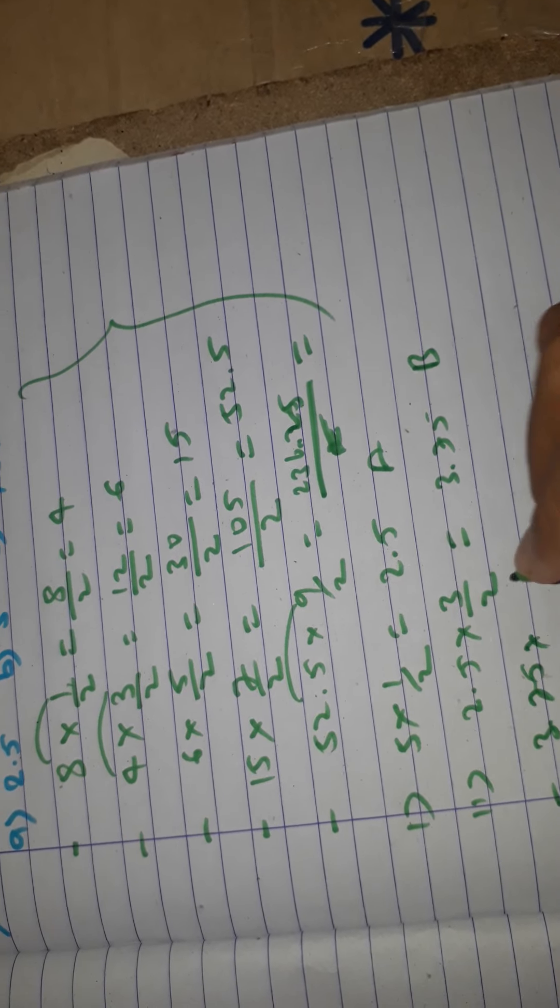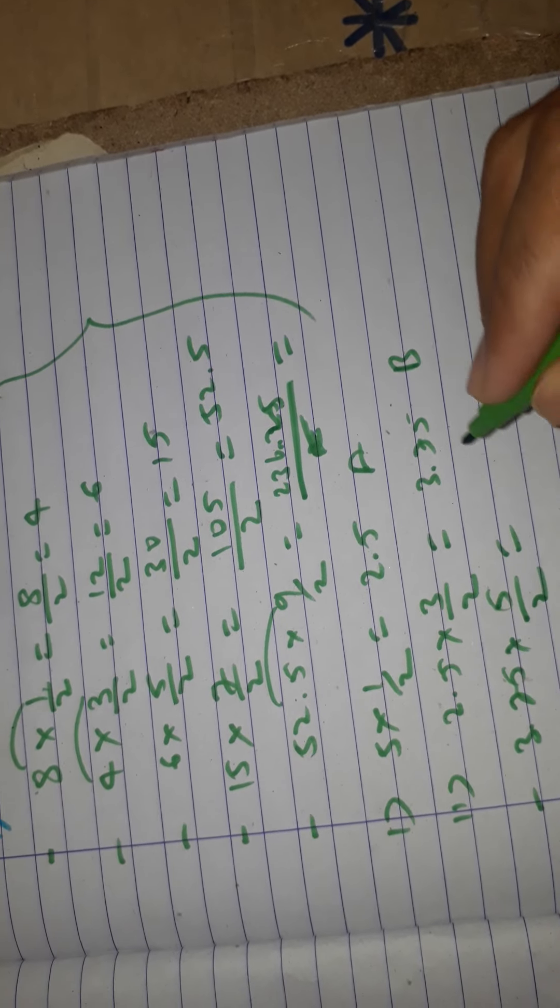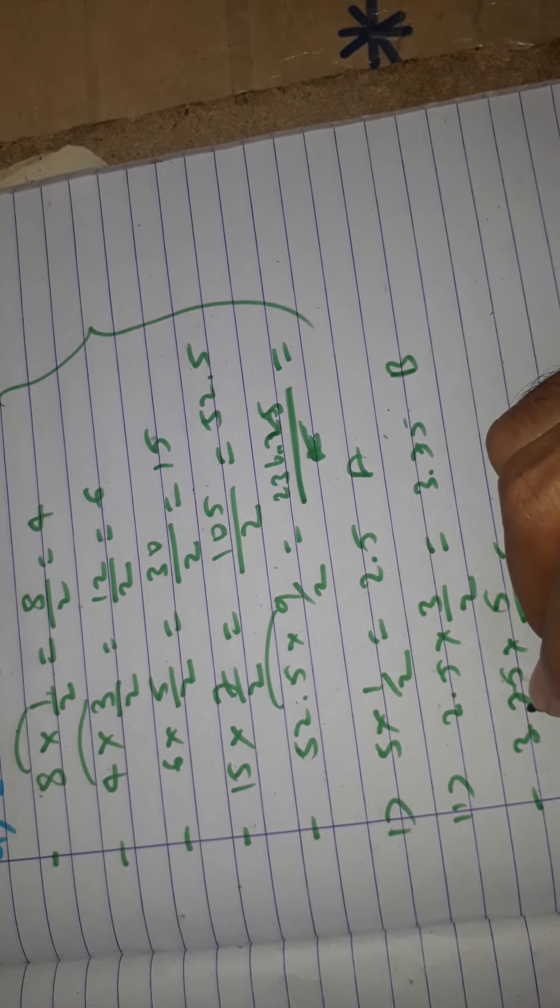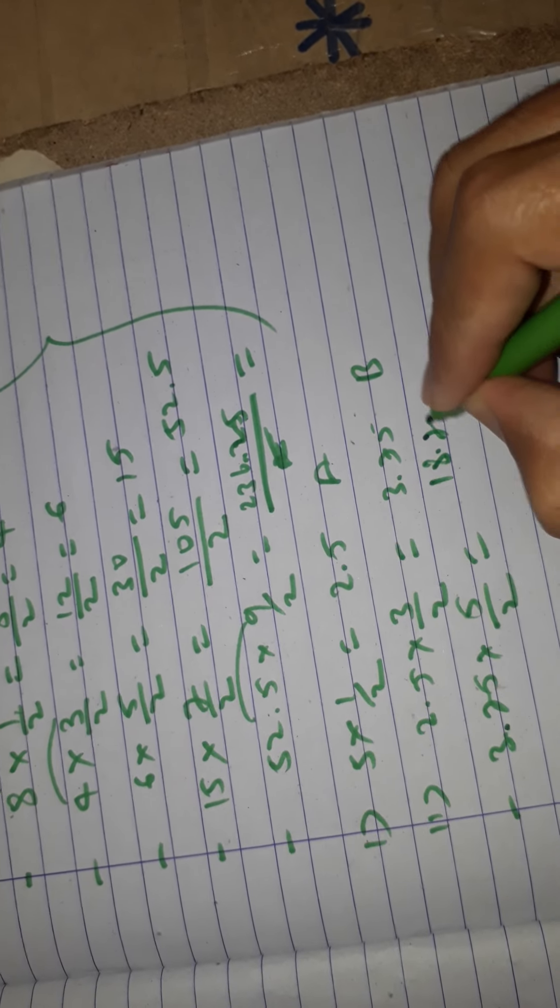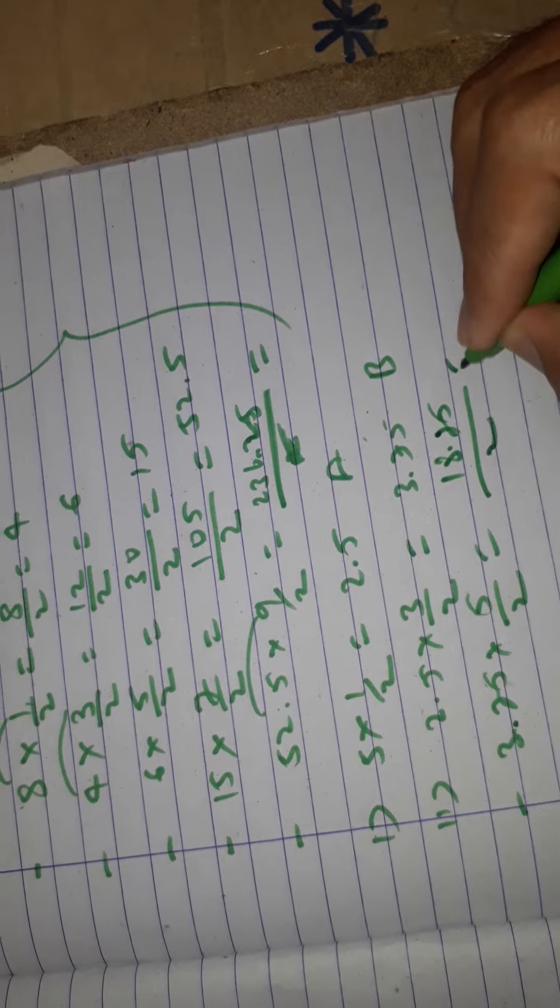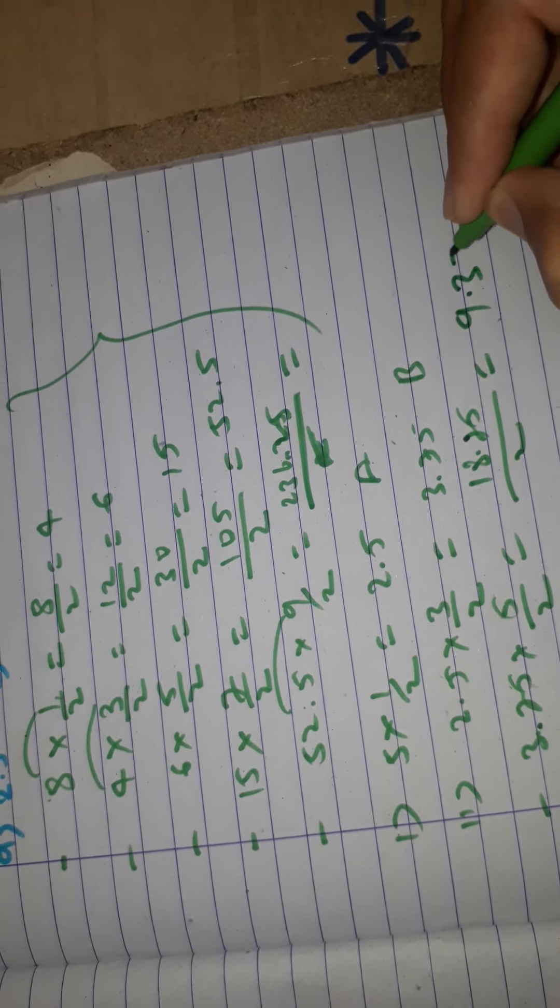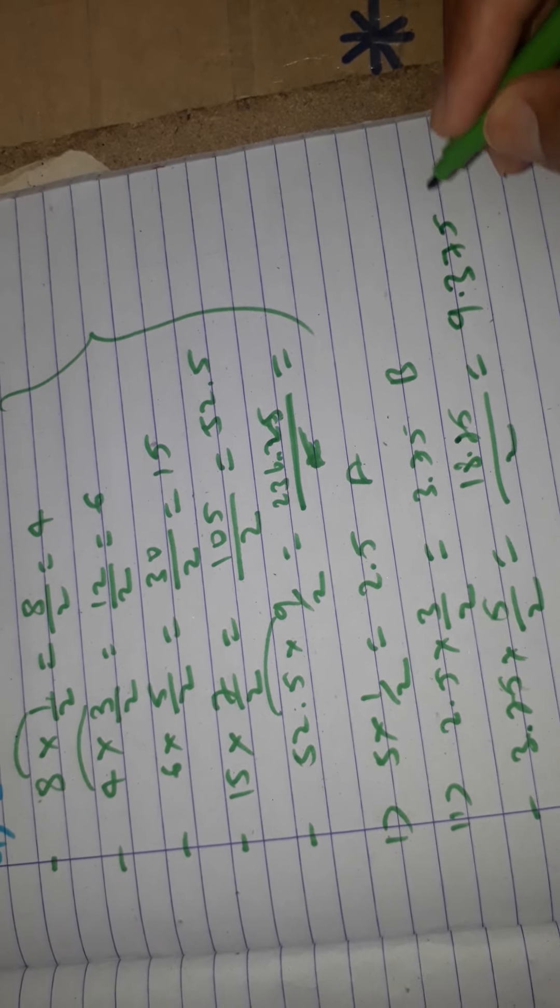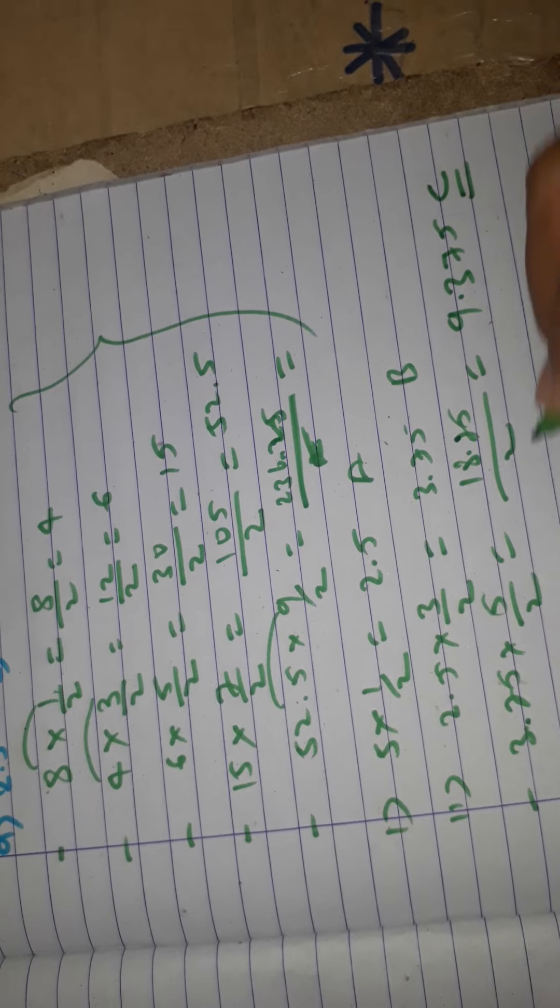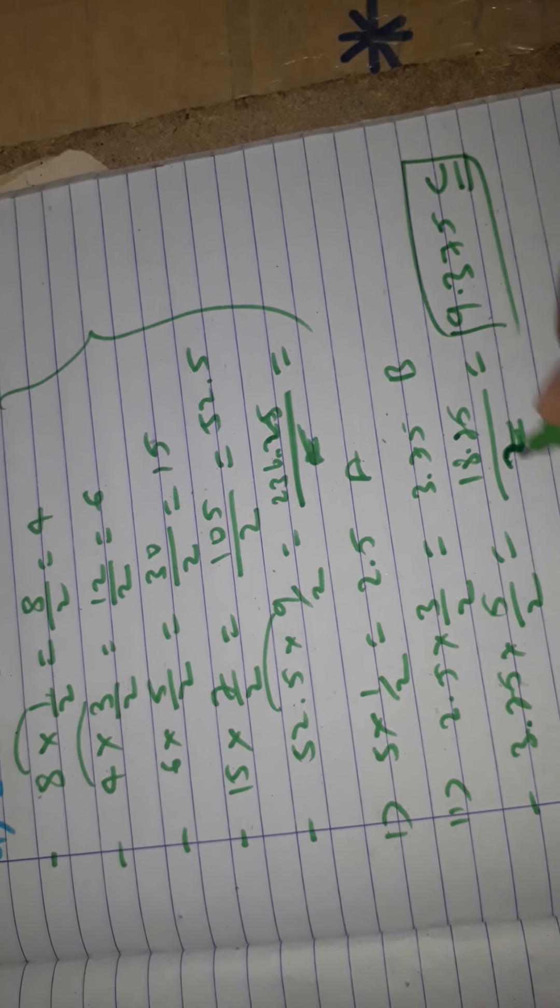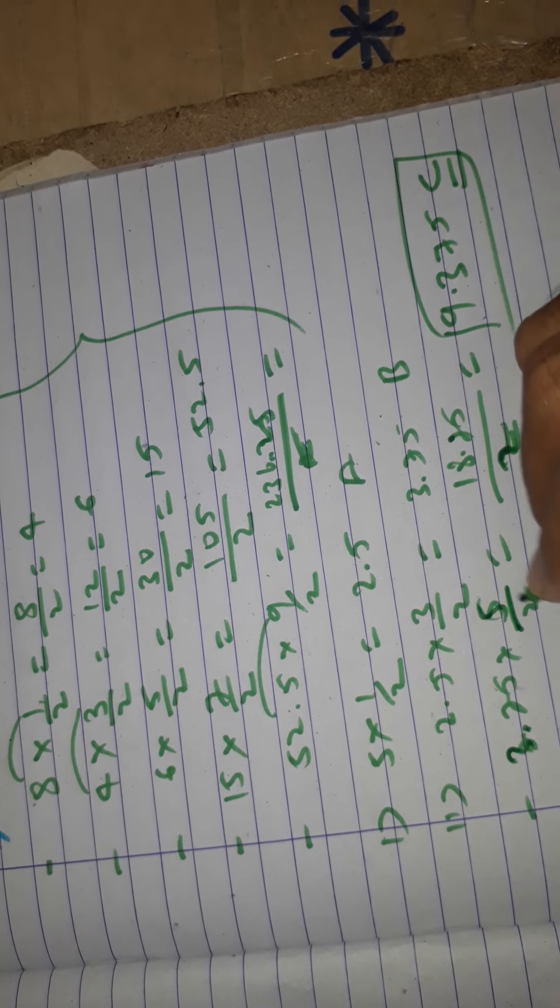Now 3.75 into 5/2: 5 into 3.75 is 18.75, divided by 2 is 9.375. This is the value of c.